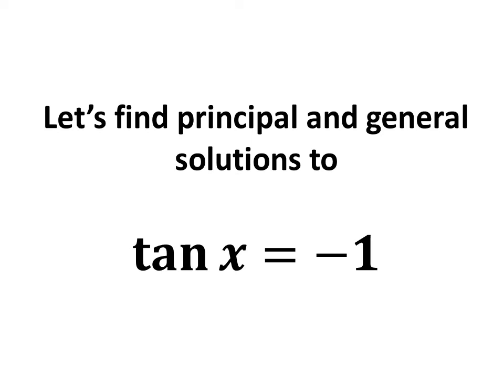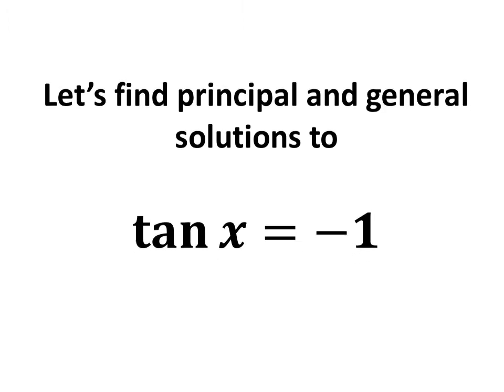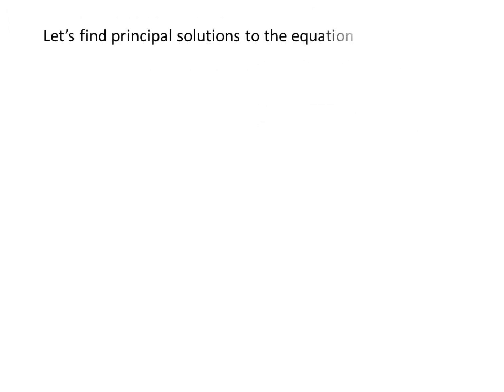In this video, we will learn to find the principal and general solutions to the equation tangent of x is equal to minus 1. Let's first find the principal solutions. We know the solutions to the trigonometric equation for which x is greater than or equal to 0 and less than 2 times pi are the principal solutions.